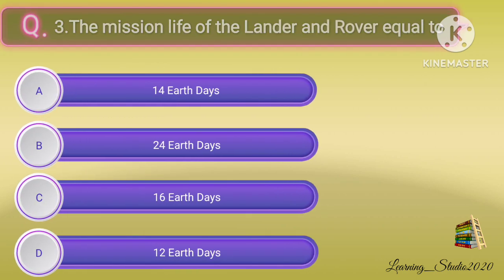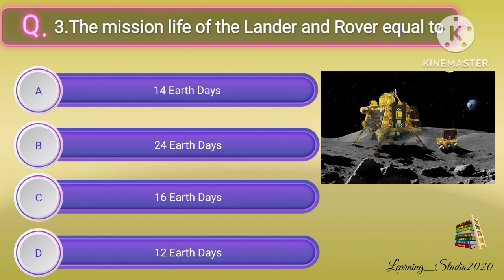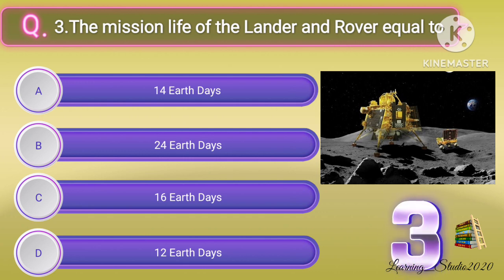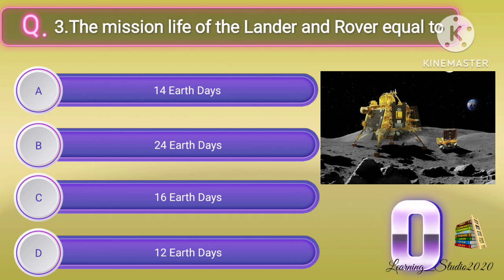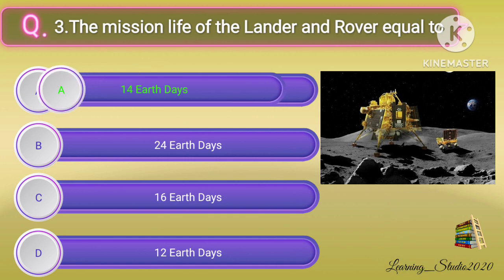The mission life of the lander and rover is equal to? Correct answer: option A, 14 Earth days.